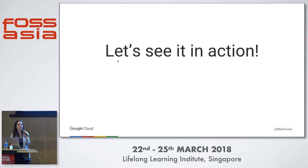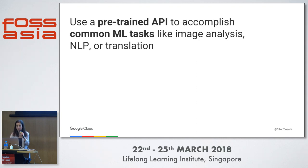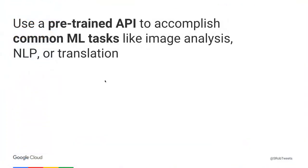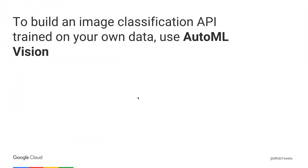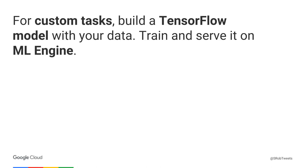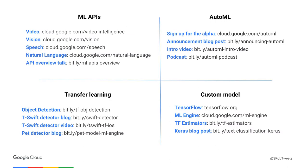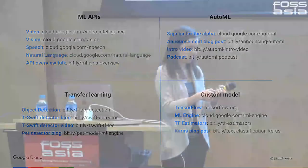If you remember just three things from this presentation: you can use a pre-trained API to accomplish common machine learning tasks like image analysis, natural language processing, or translation. If you want to build a custom image recognition model, check out AutoML Vision — come chat with me after if you've got a use case, we'd love to help you get access. And for custom tasks, you can build a TensorFlow model with your own data and optionally train and serve it on Machine Learning Engine. Thank you all for coming.